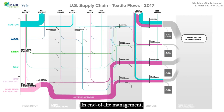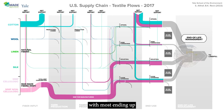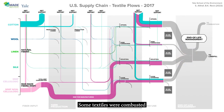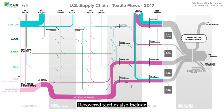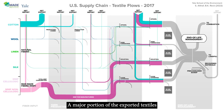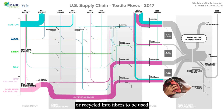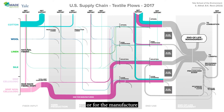In end-of-life management, textile products that are no longer needed or functional reach the end of life, with most ending up in landfills — around 70% in 2017. Some textiles were combusted or incinerated, and only a small fraction was recovered. Recovered textiles also include pre-consumer scrap. A major portion of exported textiles was end-of-life apparel for reuse or recycling in other countries. The remaining recovered textiles were either refurbished into wiping cloths for industrial use, or recycled into fibers for industrial applications or floor covering manufacture.